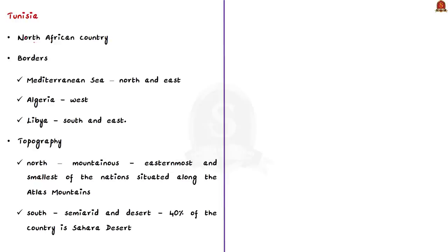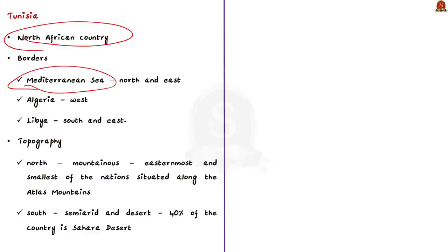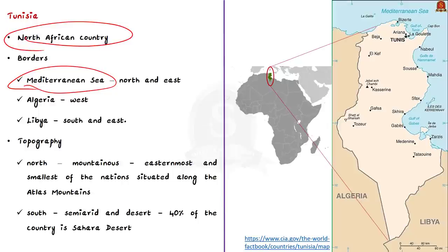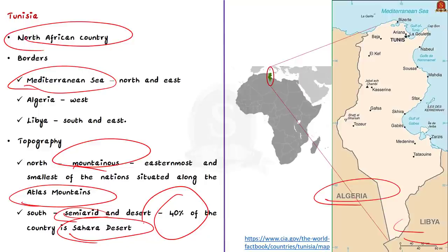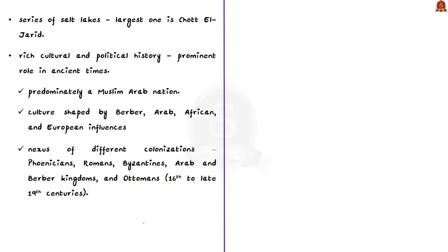Tunisia is a North African country found along the Mediterranean Sea — it is not a landlocked country. It is bounded by Algeria to the west and Libya to its south and east. The northern part of Tunisia is mountainous because the Atlas Mountains pass through this country. The southern region is semi-arid, covered by the Sahara Desert — almost 40% of this country lies in the desert zone. This country is also known for its salt lakes, locally known as Chauts or Shats.